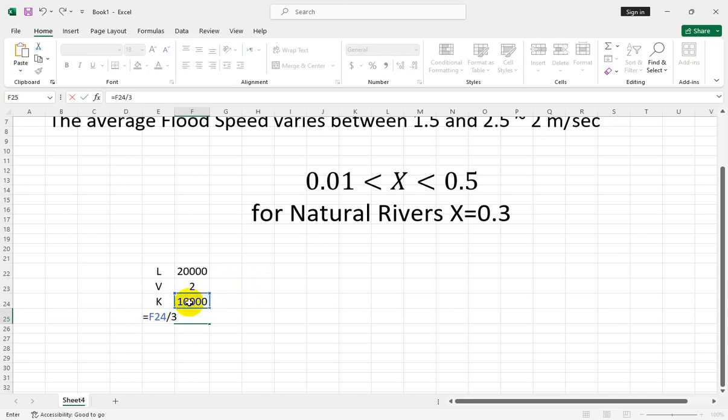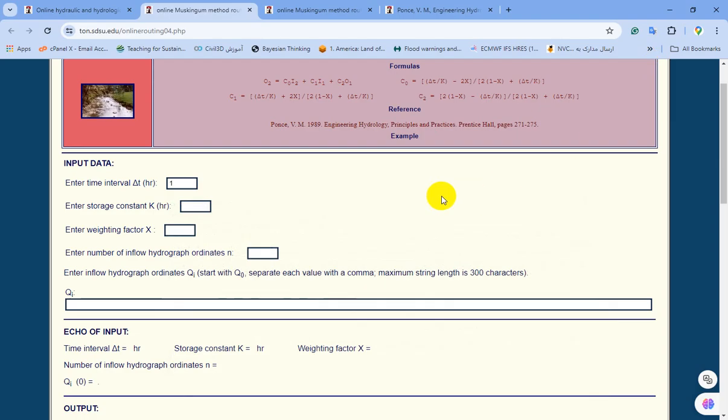In order to convert it to hours, these parameters lead to K equals 2.77 hours. You can enter this value here, 2.78.